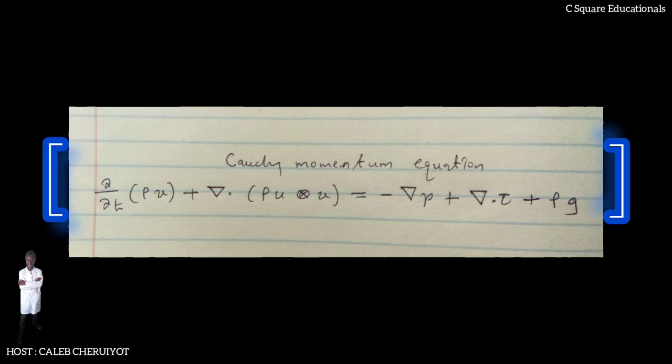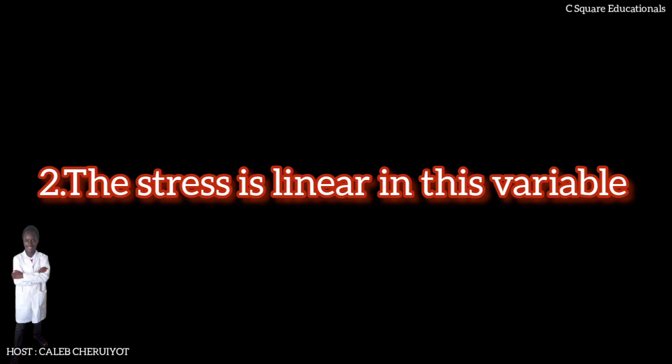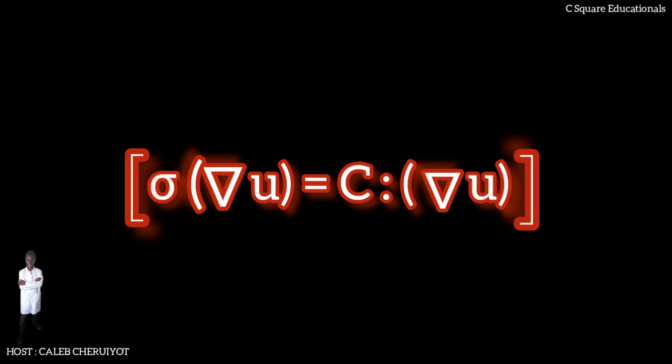First, the stress is Galilean invariant. It does not depend directly on the flow velocity but only on spatial derivatives of the flow velocity. So the stress variable is the tensor gradient ∇u. Second, the stress tensor is linear in this variable: σ(∇u) = C:∇u, where C is the fourth order tensor representing the constant of proportionality, called the viscosity or elasticity tensor.